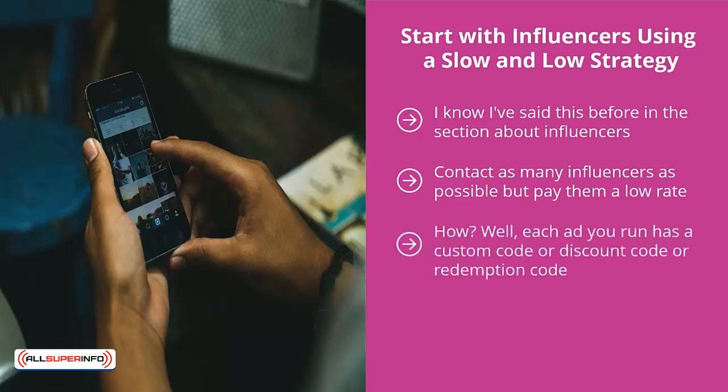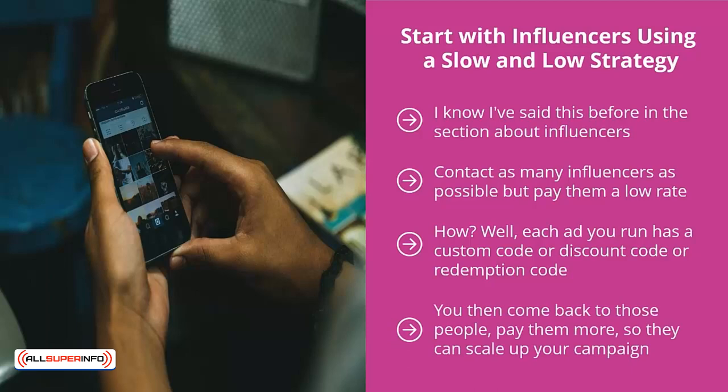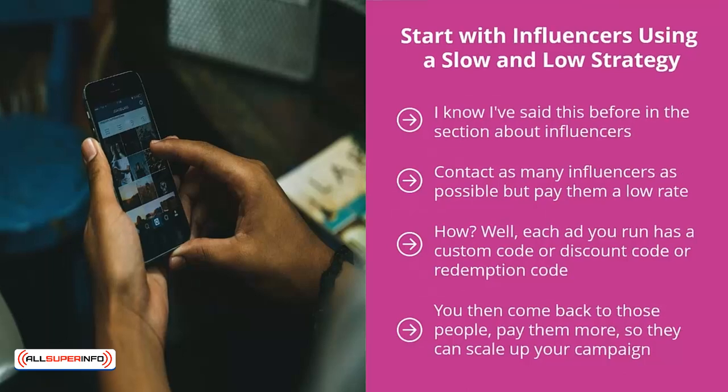Each ad you run has a custom code, discount code, or redemption code, so you'll be able to see which ones actually produce results. You then come back to those people and pay them more so they can scale up your campaign — they are clearly credible enough with their followers to drive actual sales.